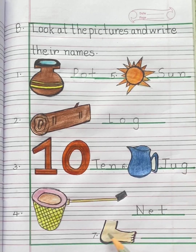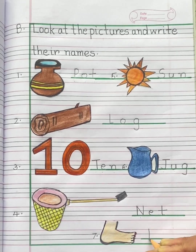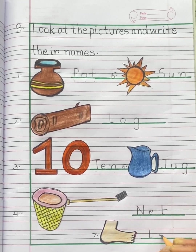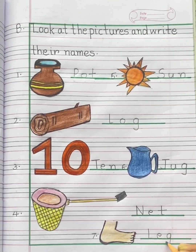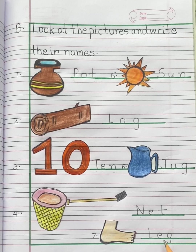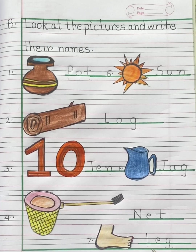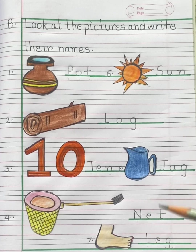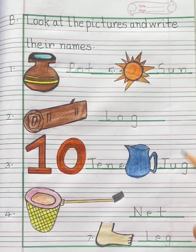This is leg. Leg. Beginning sound is L. Middle sound is E. Ending sound is G. Leg. So children, watch the video carefully and practice at home.